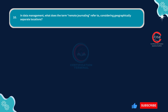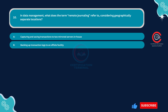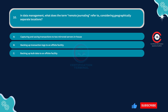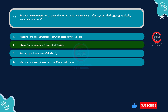Question 10: In data management, what does the term remote journaling refer to, considering geographically separate locations? Option A: Capturing and saving transactions to two mirrored servers in-house. Option B: Backing up transaction logs to an off-site facility. Option C: Backing up bulk data to an off-site facility. Option D: Capturing and saving transactions to different media types. The correct answer is Option B: Backing up transaction logs to an off-site facility.